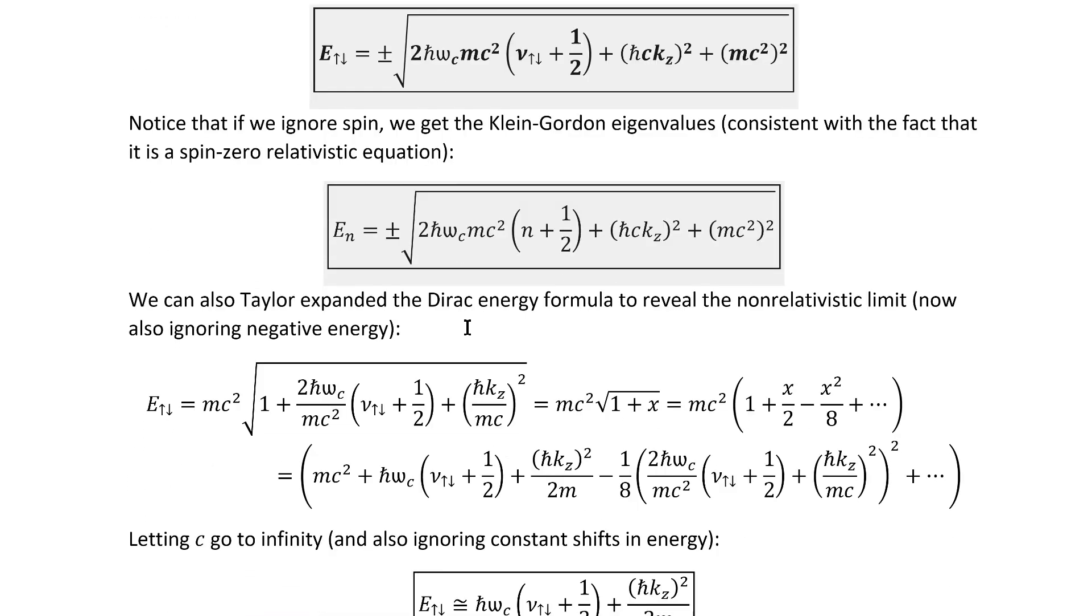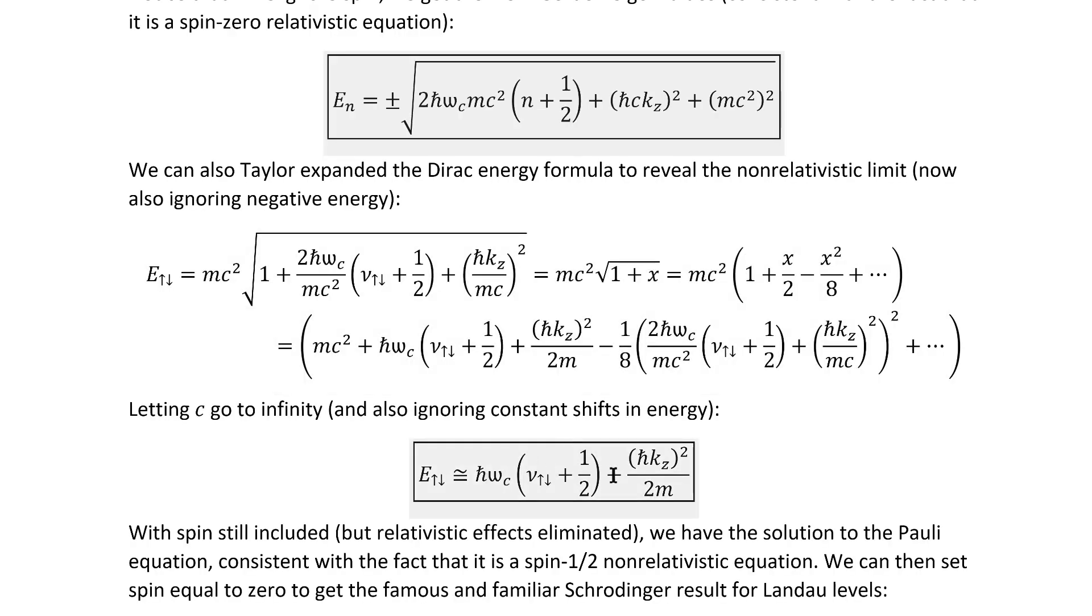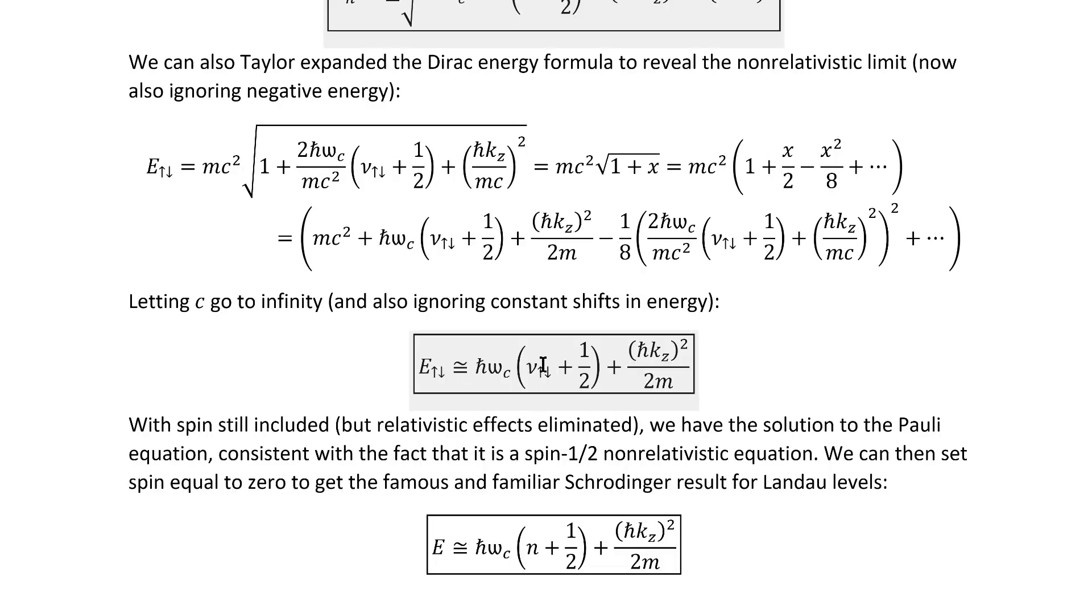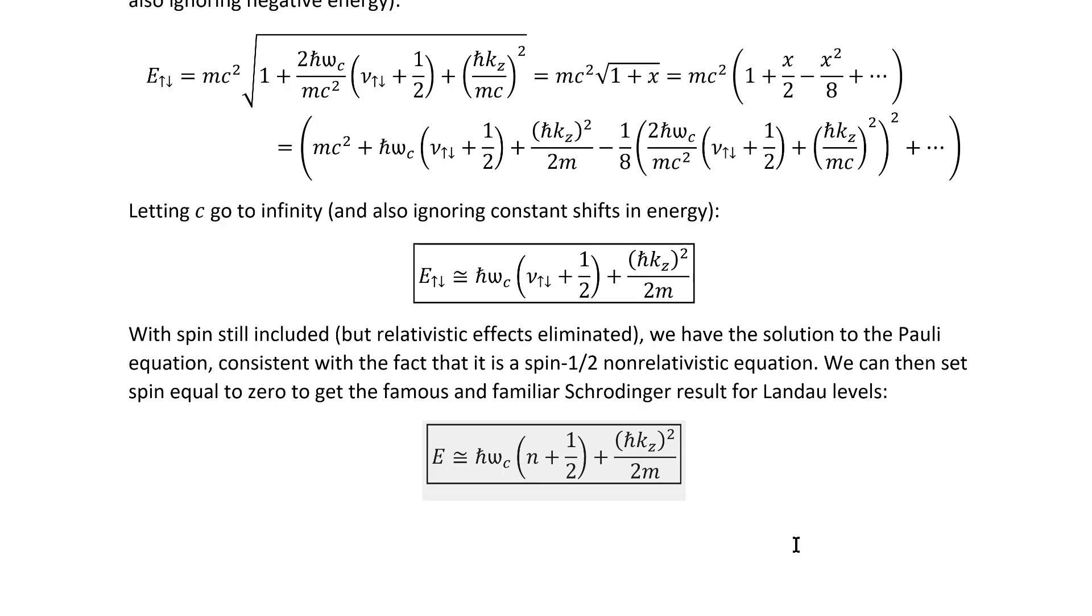We can also Taylor expand the Dirac formula to get the non-relativistic limit. Performing that gives us this result. So we have non-relativistic but still spin half which means we've just found the energy eigenvalues for the Pauli equation. If we then ignore spin again but on the non-relativistic limit here, well we have the Schrodinger results that we expected to get. We've therefore accomplished our mission. We've used the raising and lowering operator method to solve the Dirac equation and we've not only gotten very elegant results for that but we've used them through the spinless and non-relativistic limit to reproduce the already familiar Schrodinger result.